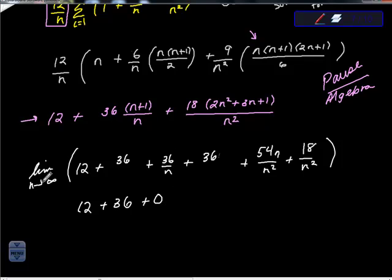The limit of 36 as n goes to 0, because there is no n value here to affect it, is 36 again, isn't it? The value of 54, well, look at this. This n here cancels one of those. So as n goes to infinity, this goes to 0. And as n goes to infinity, this goes to 0, because you get 18 over a huge number.